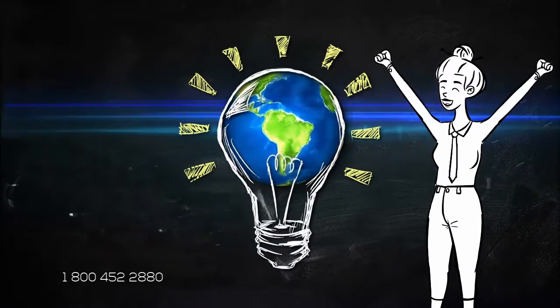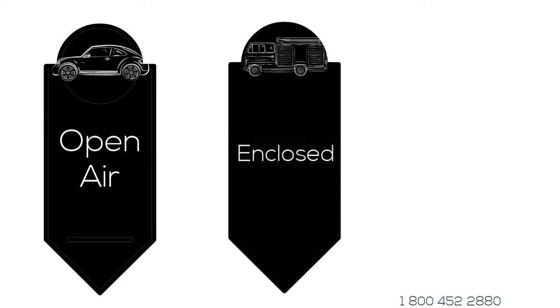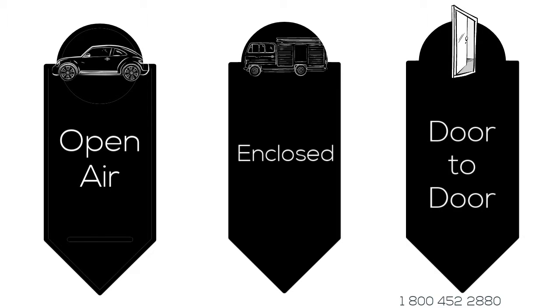We offer different types of shipping services that will fit any budget. Open air, the fastest and cheapest way to transport your vehicle. Enclosed, a little more time to deliver, but protection from all the elements. Door to door, a way to deliver your vehicle right to your doorstep.